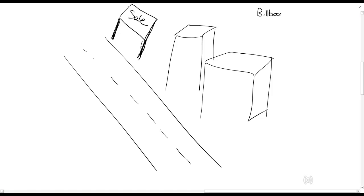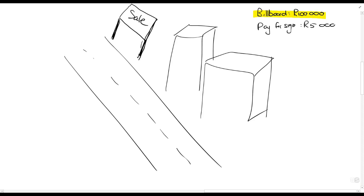Next to the highway we often see these big metal billboard structures. As a company, I ask someone to erect the billboard for 100,000 rands — we'll be able to use it for many years. And I pay for the sign — a sales sign — for 5,000 rands; I'll use it for a couple of weeks and then change it. This billboard is an enduring benefit because I pay once and can use it for a long period of time. The sign that changes all the time — the poster on it — will be not capital but revenue in nature.